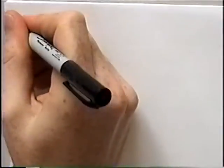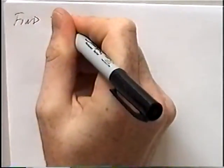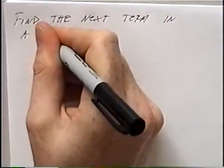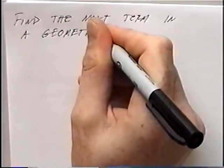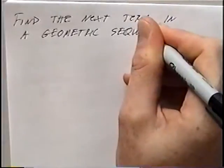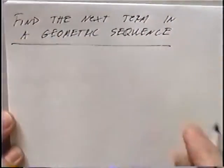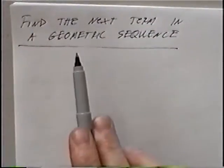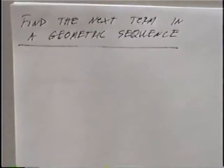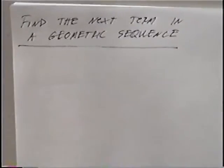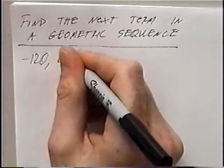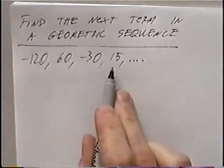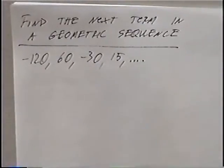The title of the first section of notes is 'Find the Next Term in a Geometric Sequence.' A geometric sequence is a series of numbers like an arithmetic sequence. The difference is that geometric sequences involve multiplying by a number rather than adding or subtracting. The dot dot dot means the series will continue forever, and finding the next term means finding the next number.